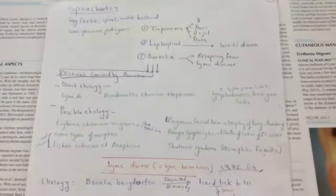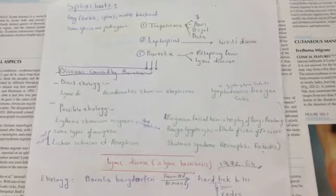Lyme borrelioses. We will talk about the spirochetes. Spirochetes are long, flexible, spiral, motile bacteria.